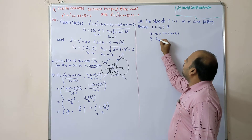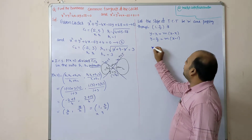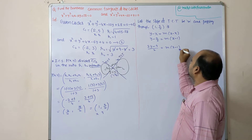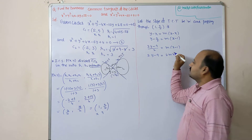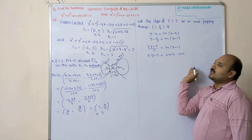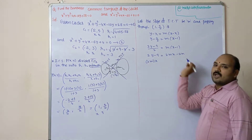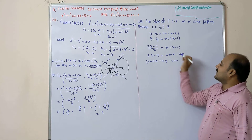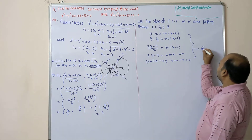Using slope-point form: y − 9/2 = m(x − 1). Multiplying through: (2y − 9)/2 = m(x − 1). Cross-multiplying: 2y − 9 = 2m(x − 1), which gives 2mx − 2y − 2m + 9 = 0. This is equation number 3.